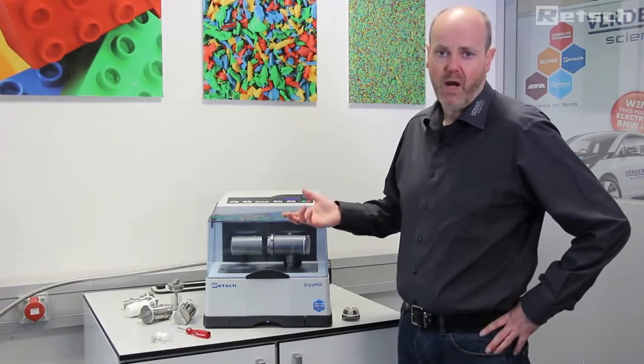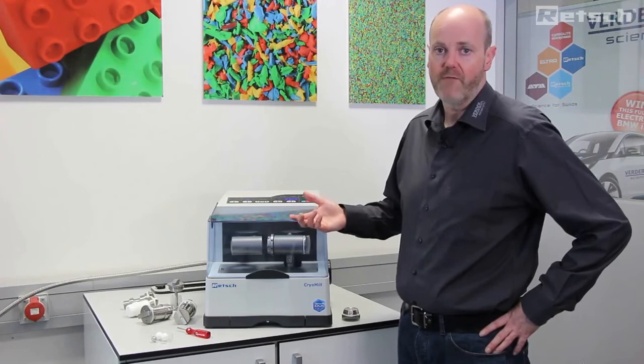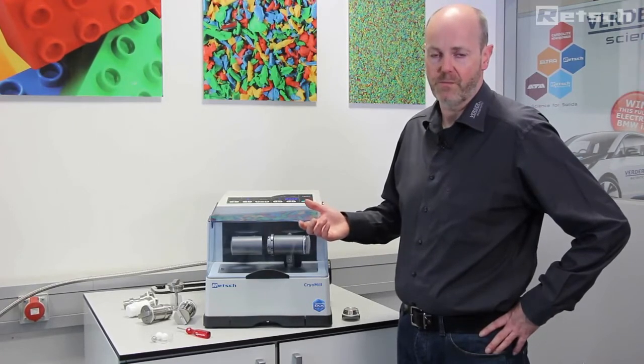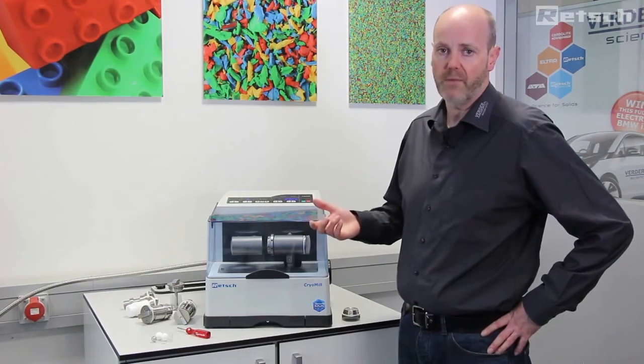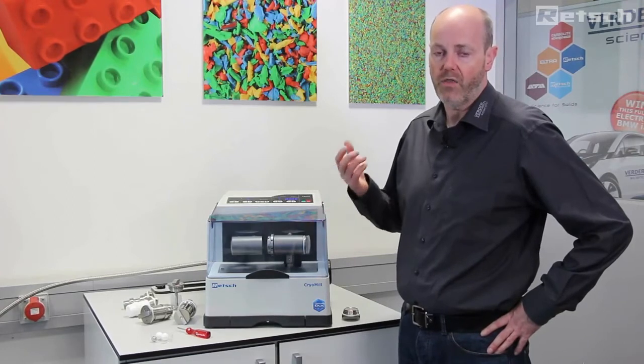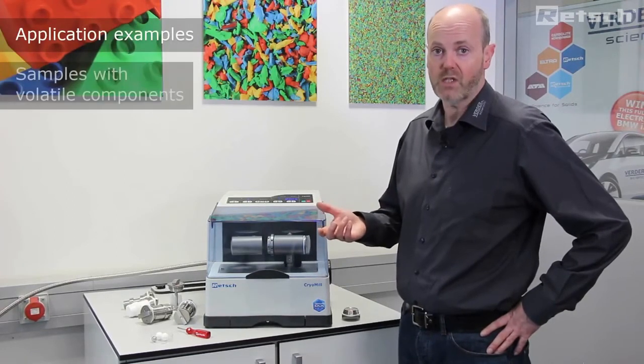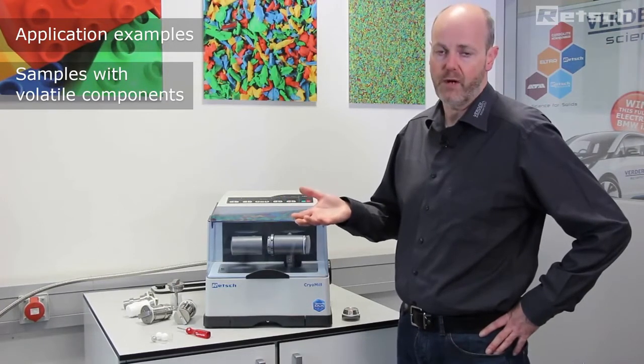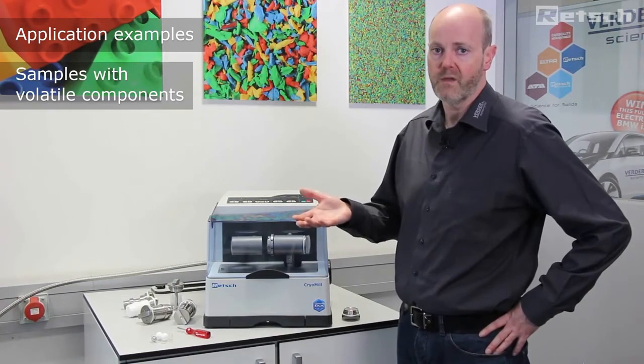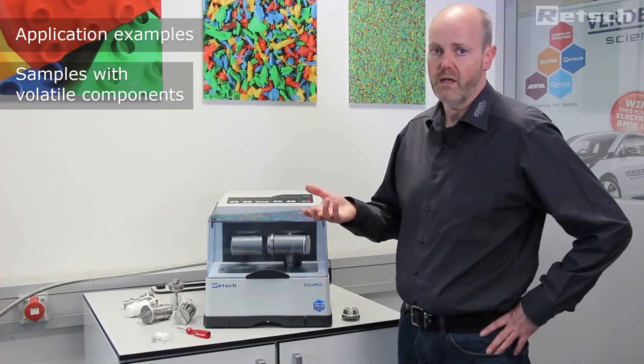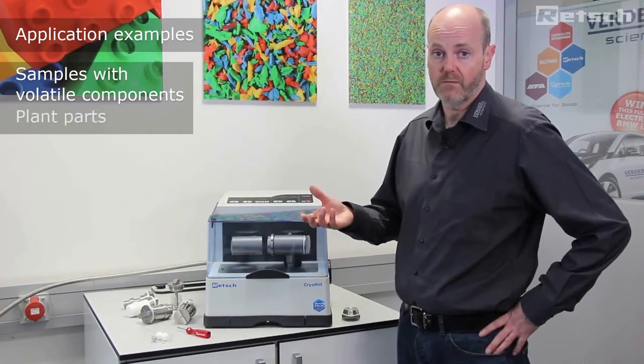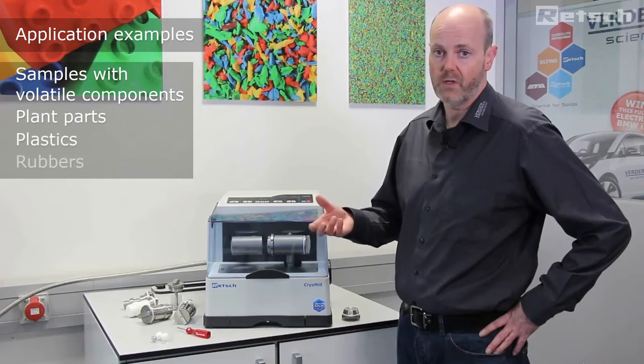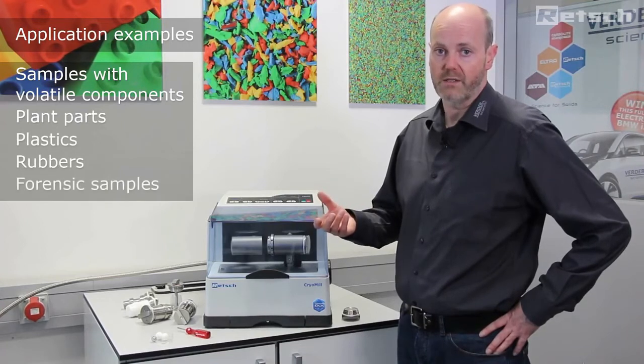Cryogenic preparation is commonly used in various areas of research. Common and typical application areas are those that want to preserve the volatile compounds that may be driven off during ambient preparation techniques, and these may include sample materials such as plant parts, plastics, rubbers, and forensic science.